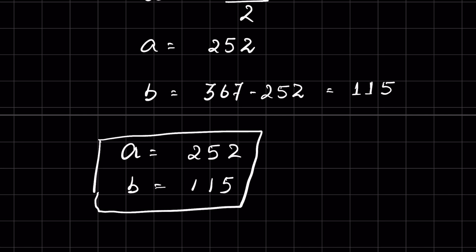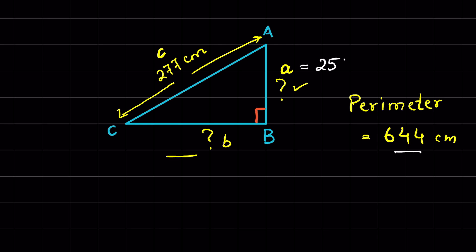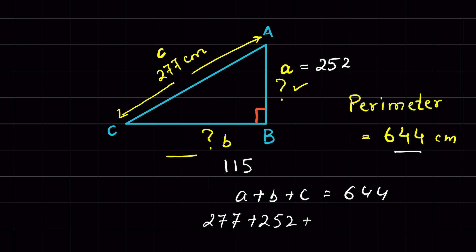We can verify: a plus b plus c should equal 644. So 277 plus 252 plus 115 equals 644. Computing step by step confirms LHS equals RHS, so the answer is verified. Like and subscribe, thanks for watching.